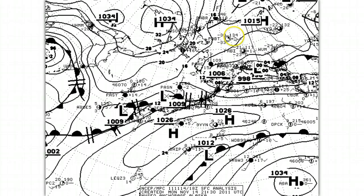The number directly above the 9 indicates the barometric pressure at the time of observation, with the initial 10 or 9 removed. In this case, the pressure is 1013.4 millibars. The number on the upper left-hand side of the cloud cover symbol indicates the air temperature in degrees Fahrenheit — at the time of observation, minus 30 degrees Fahrenheit. The dew point temperature, directly below and to the left of the cloud cover symbol, is minus 33 degrees Fahrenheit.